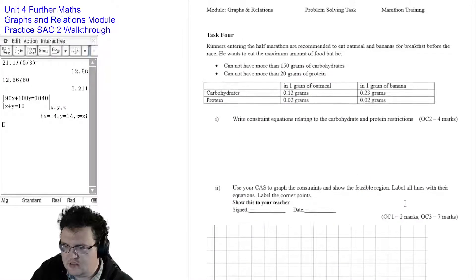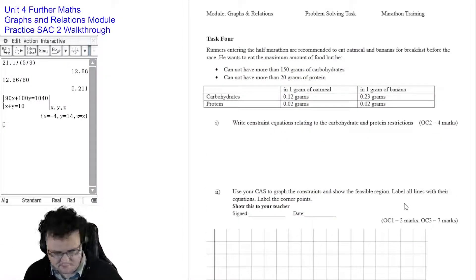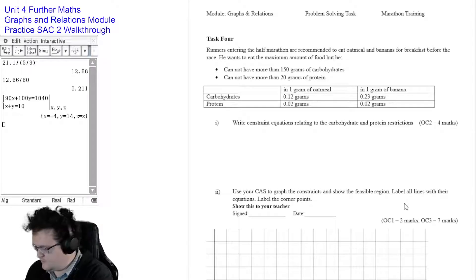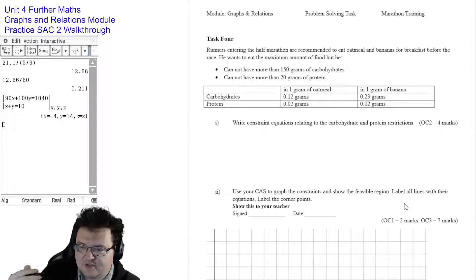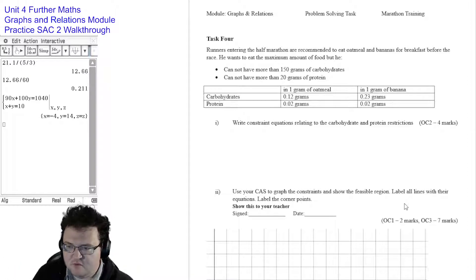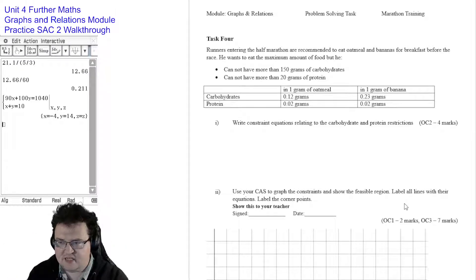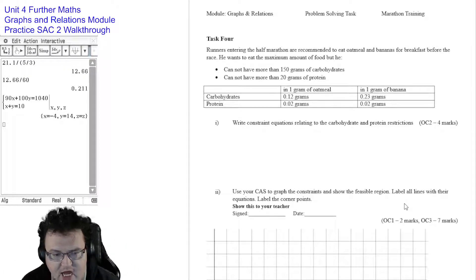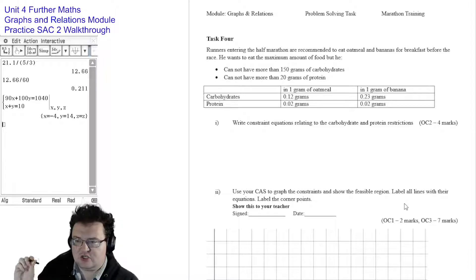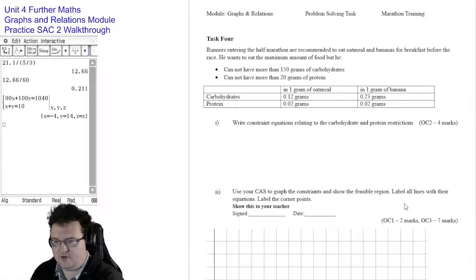So let's go to the next question here, which is task 4, which is the last part of the question. Runners entering the half marathon are recommended to eat oatmeal and bananas for breakfast before the race. This runner wants to eat the maximum amount of food, but he cannot have more than 150 grams of carbs and 20 grams of protein. In a gram of oatmeal, there's that much protein and that much carbohydrates. In a gram of banana, there's that much carbo and that much protein. Write constraint equations connecting to the carbohydrates and the protein.